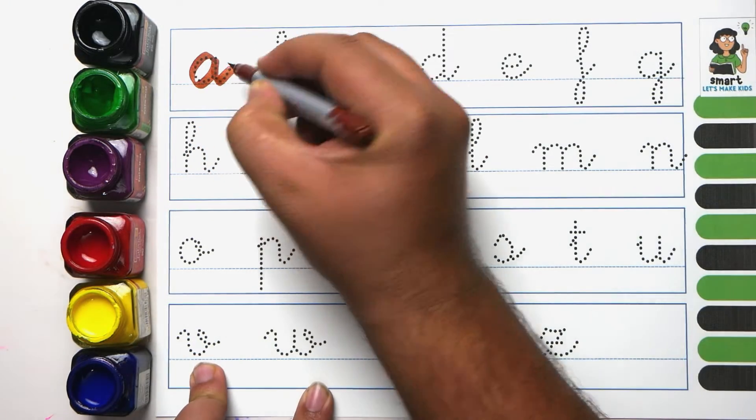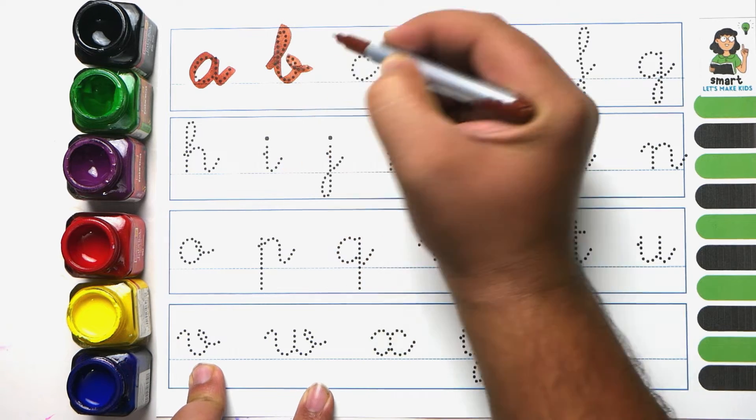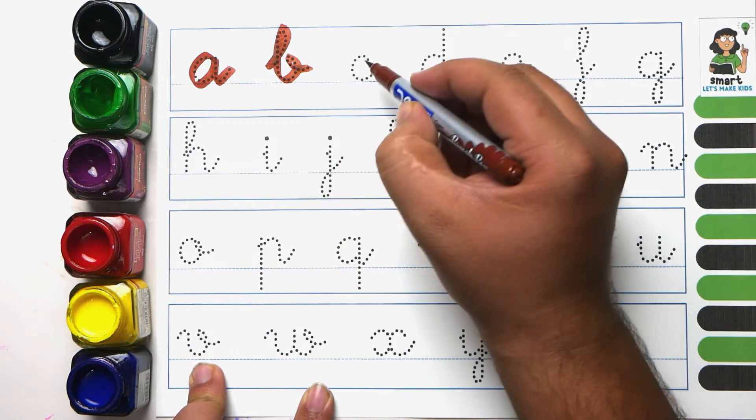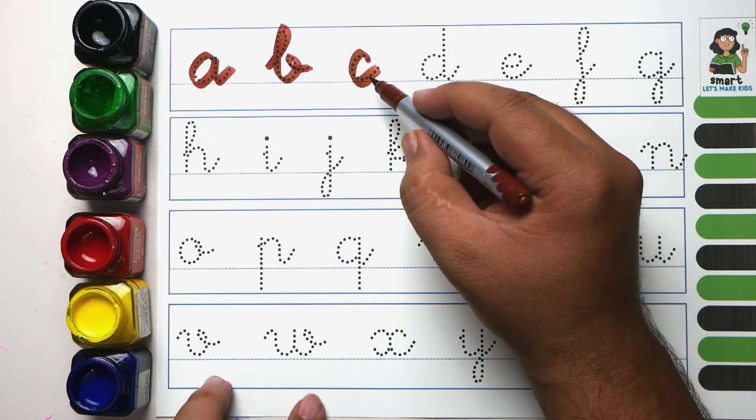A. A for apple. B. B for ball. C. C for cat.